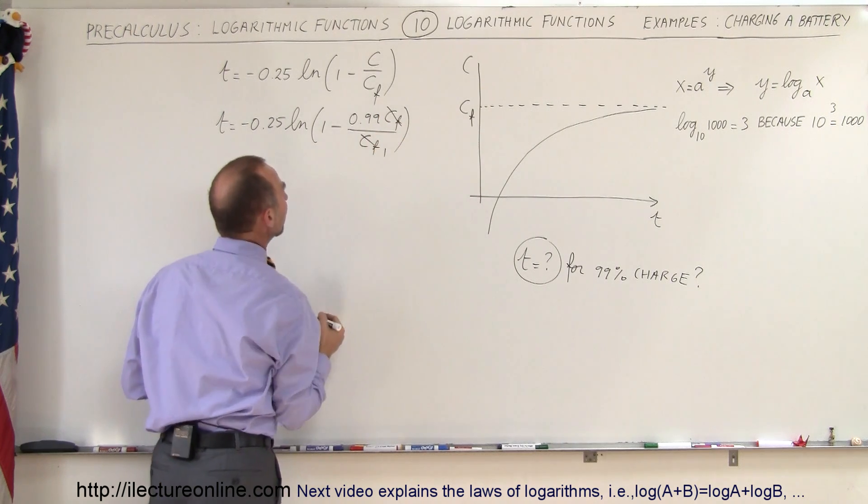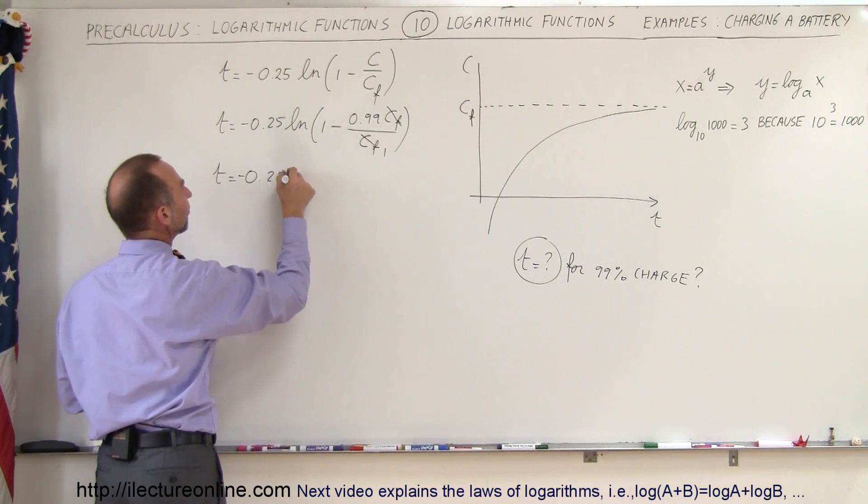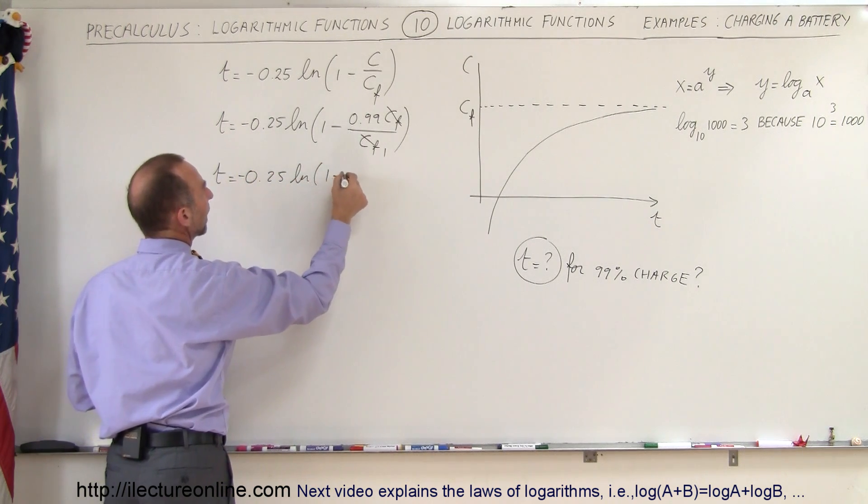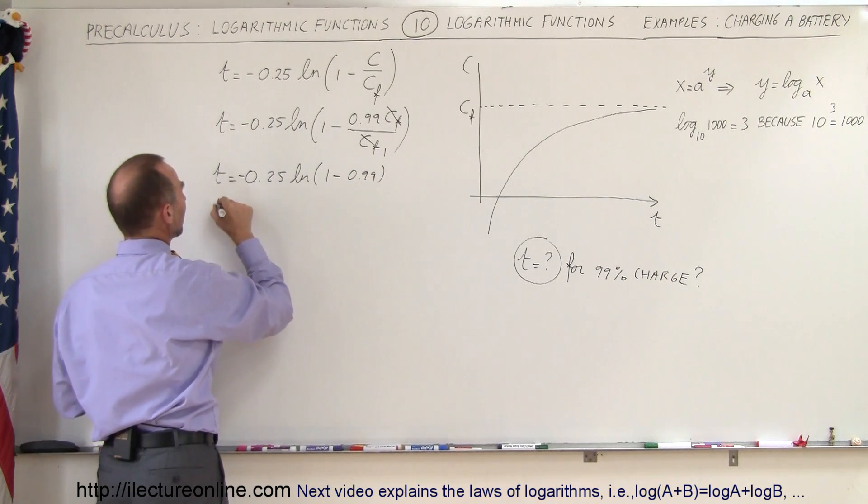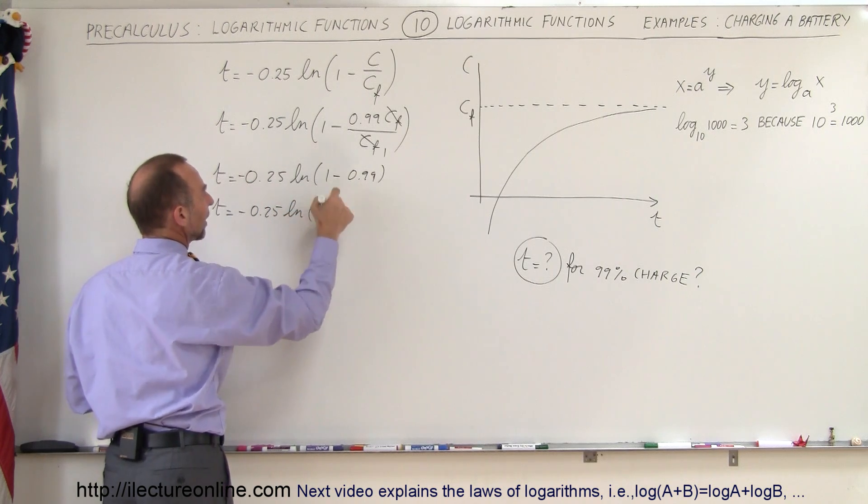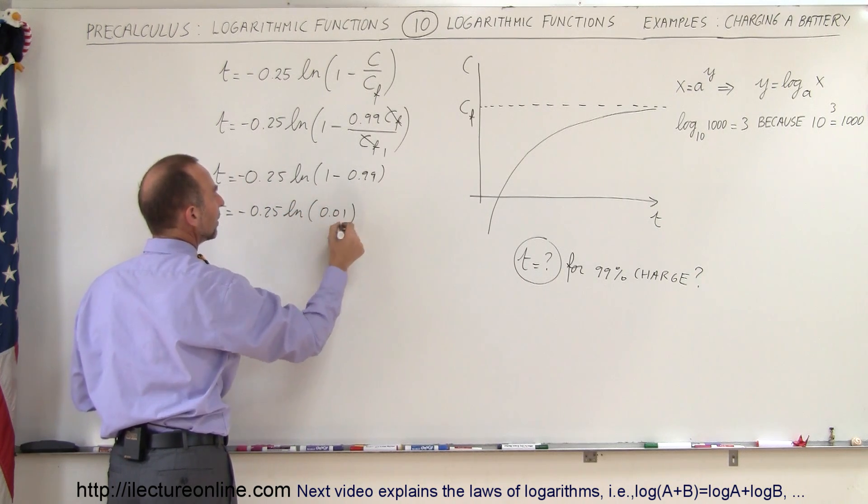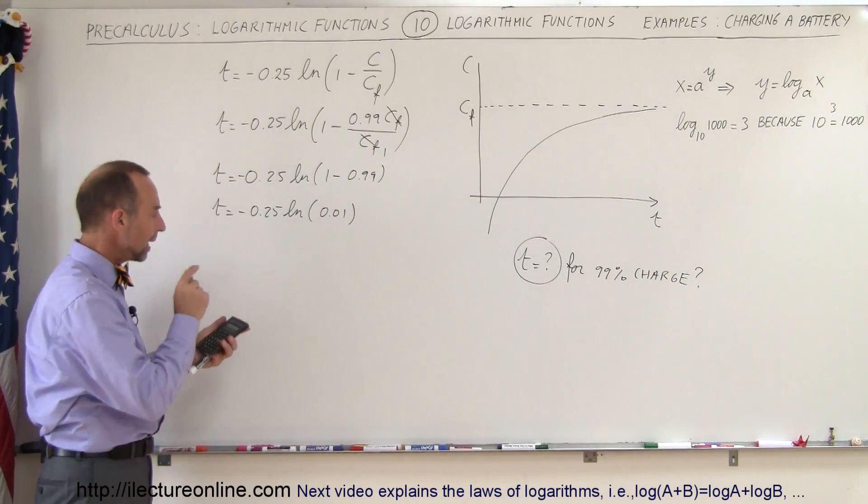This cancels out and we end up with the time equal to -0.25 times the natural log of 1 minus 0.99. That means t equals -0.25 times the natural log of 0.01. Now all we need is a calculator to figure that out.